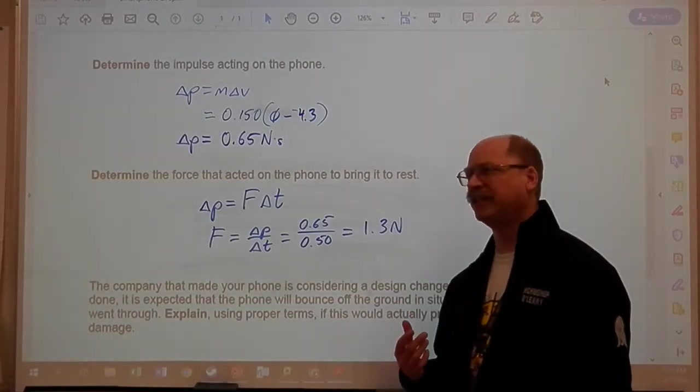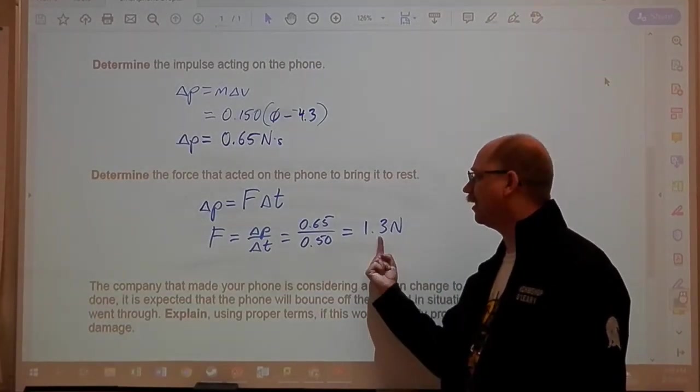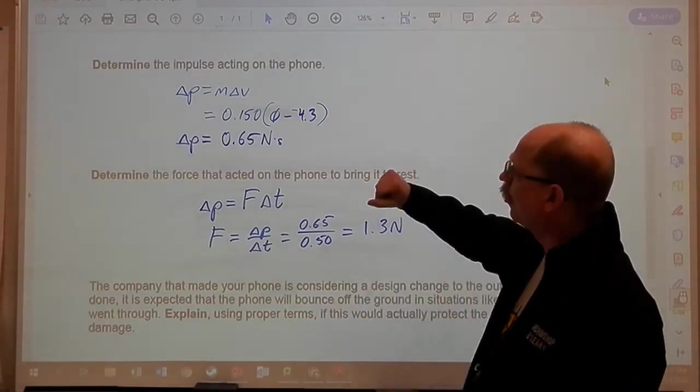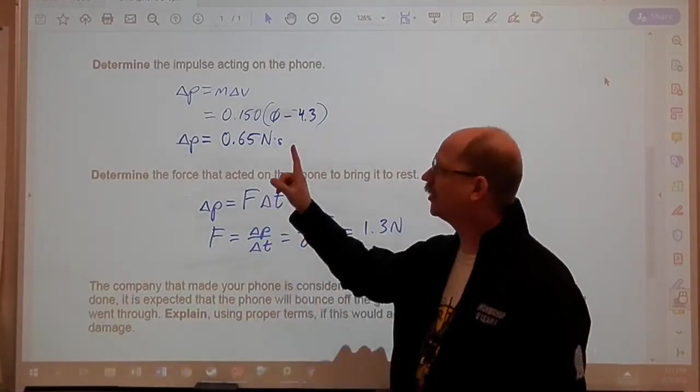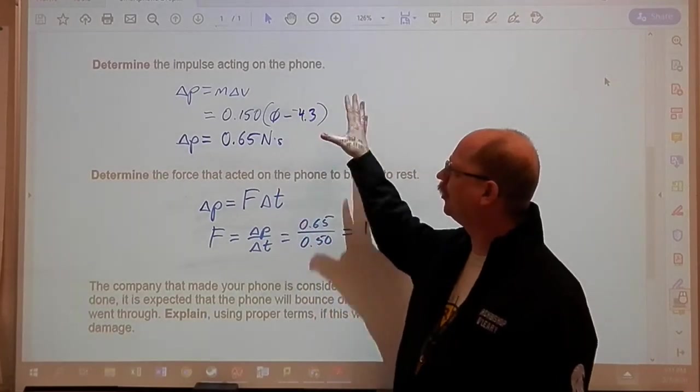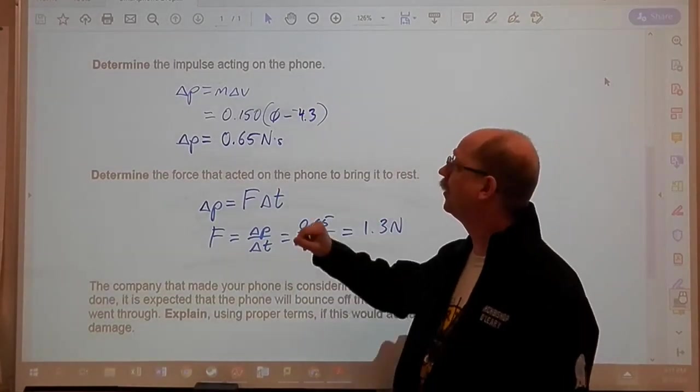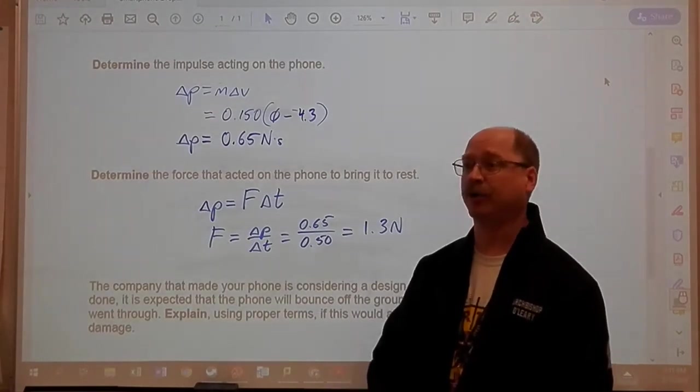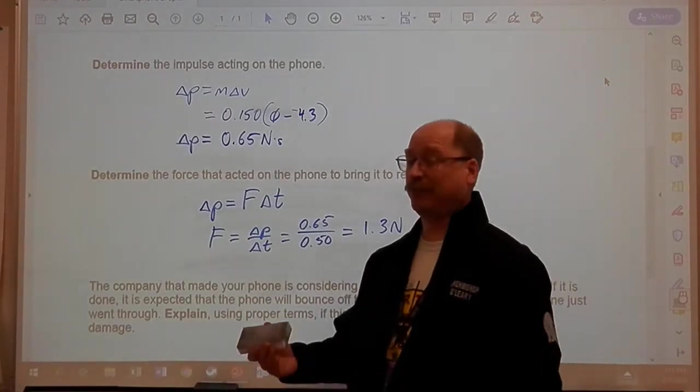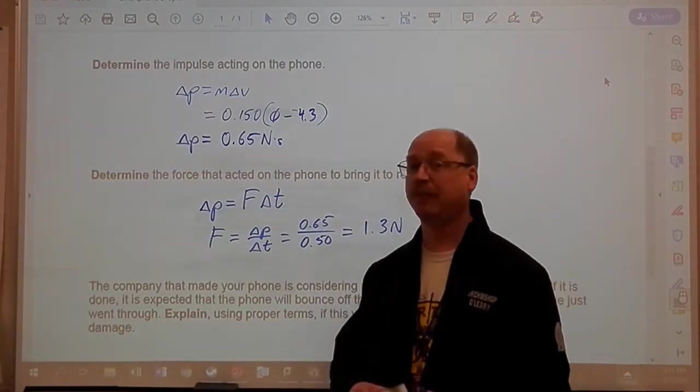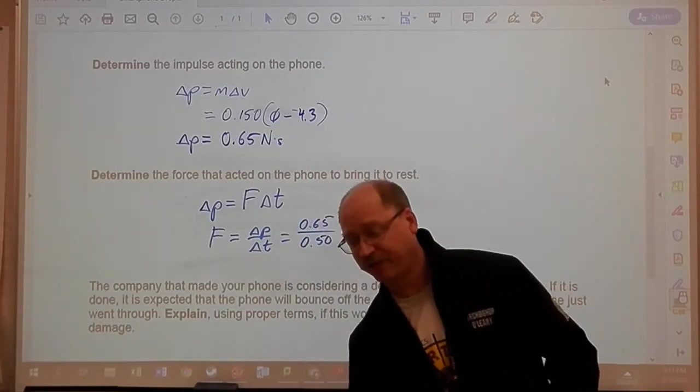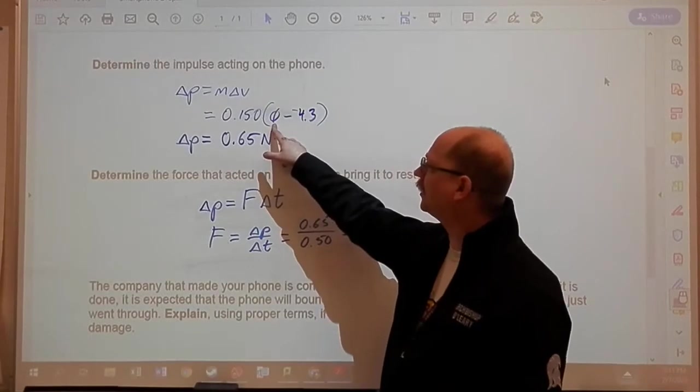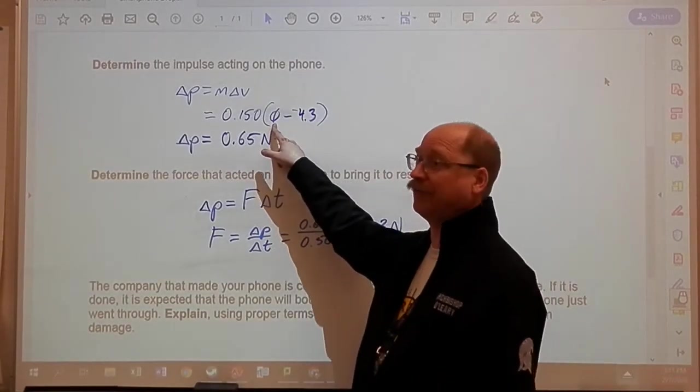So really what we want to think of is, is this design going to make this number, the force acting on the phone, get smaller? I'm going to go back up to here, because that really actually does change what's happening with the impulse. This would no longer be zero. It's going to be a number. And I don't really care what number it is, but it's going to be a number that's positive because the phone is bouncing back up off of the floor. If this is a positive number, whatever it is, one, two, three meters per second, I don't care.